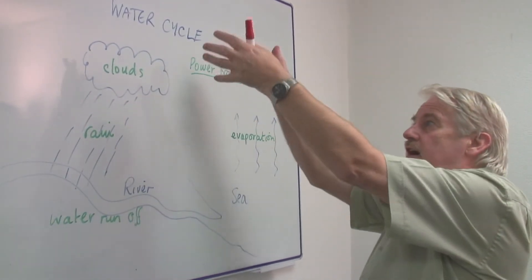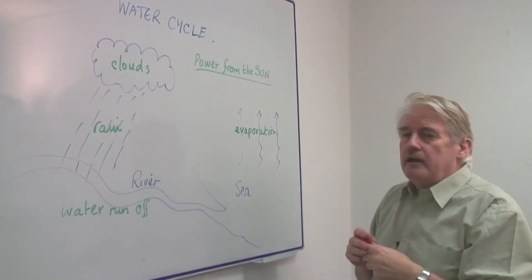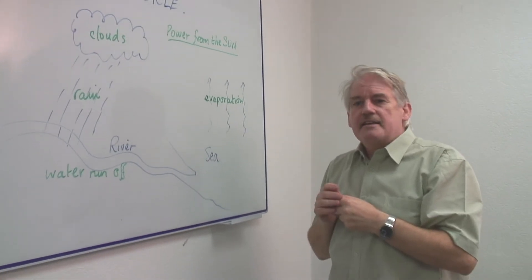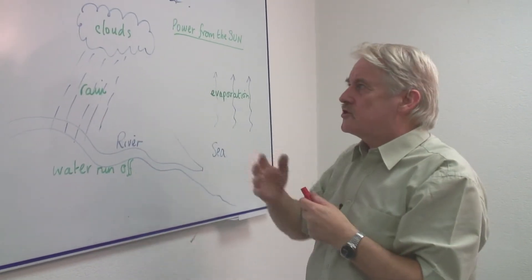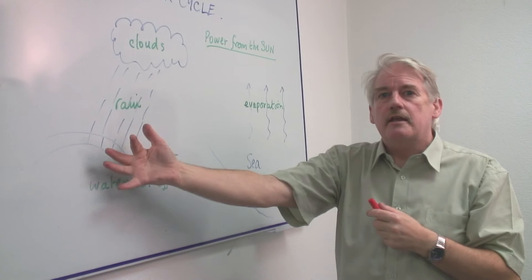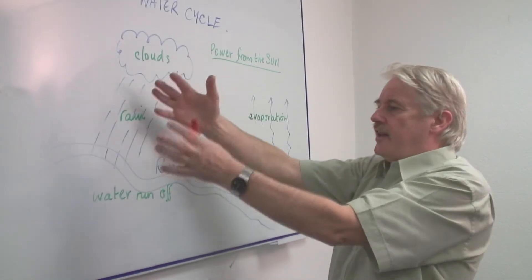As the water vapor goes higher into the atmosphere, it cools down. And as it cools down, it forms droplets. And droplets form as rain. The rain falls on the land.